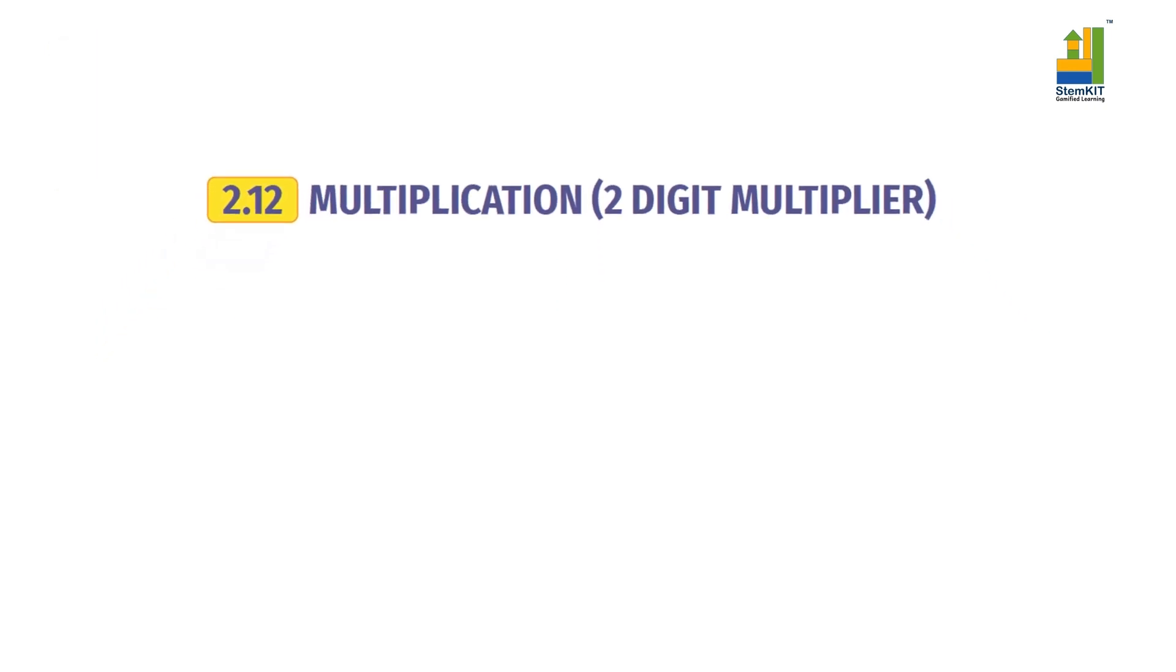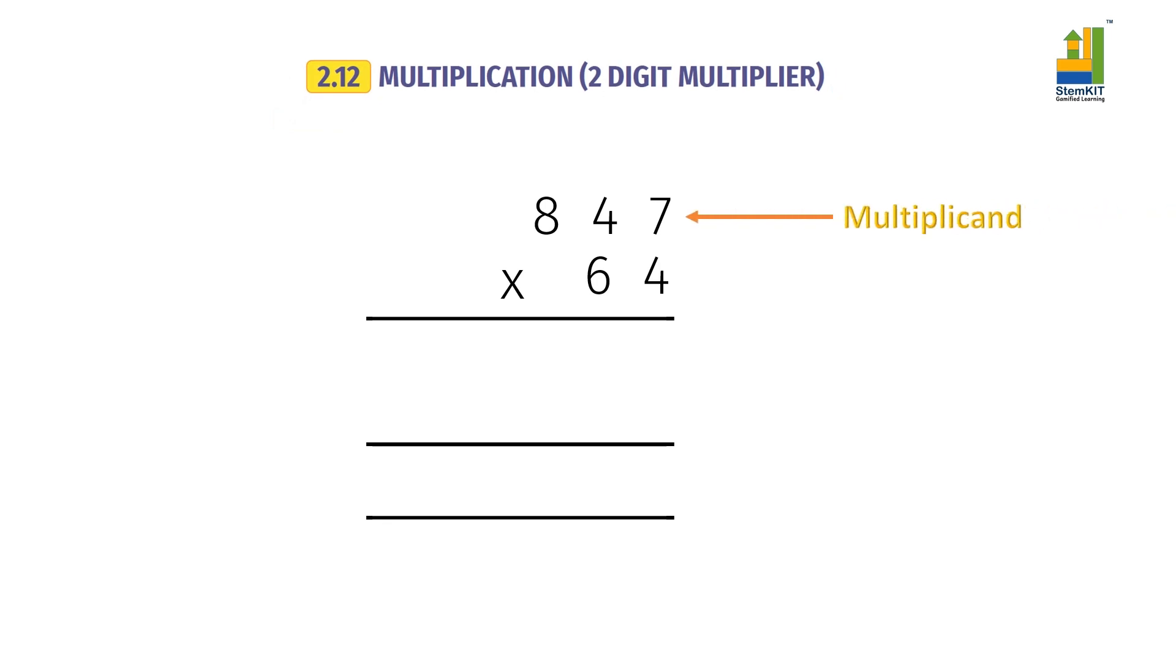The number in the top row is called the multiplicand. The bottom row is called the multiplier.